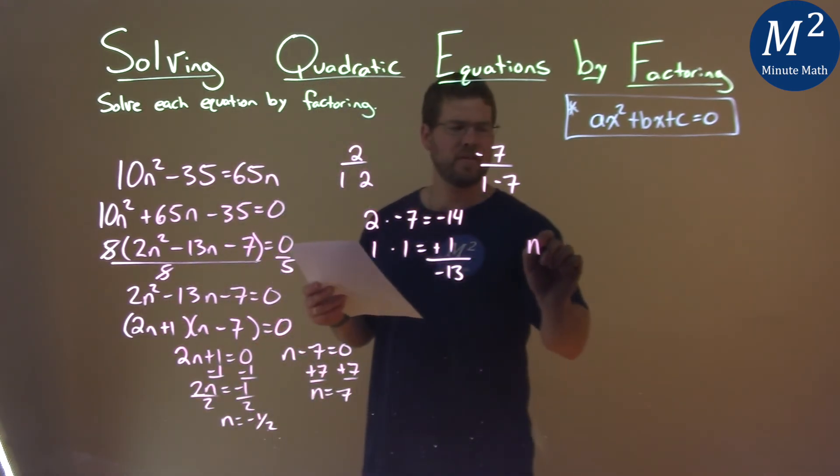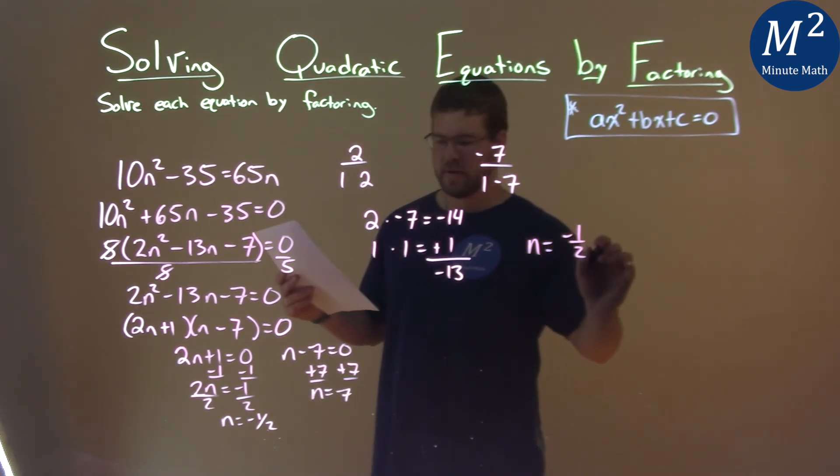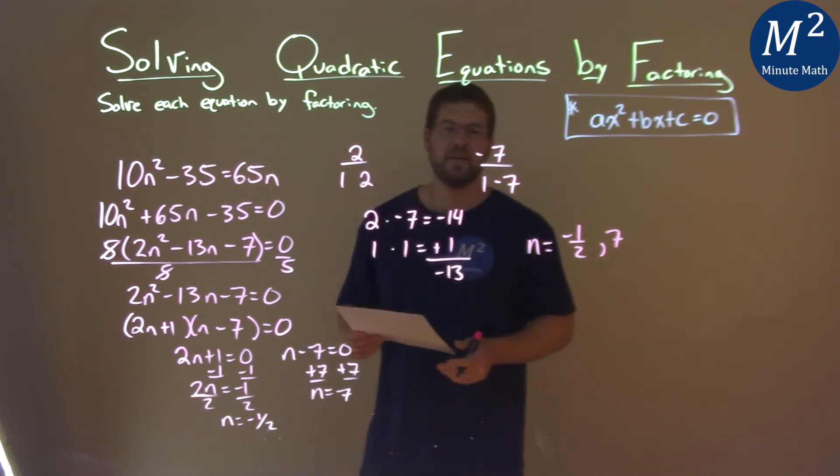So let's go write this as a single statement. n equals negative 1 half, and n equals 7, and that's it. That is our final answer.